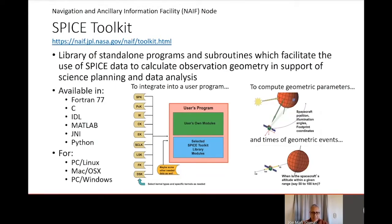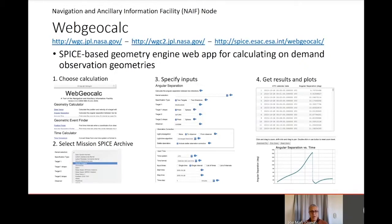The SPICE toolkit is a library of standalone programs and subroutines that users can use in their own programs to facilitate the use of SPICE data to calculate observation geometry in support of science planning and data analysis. The toolkit is available in a large number of languages for both PC and Mac platforms, and it is available from the PDS NAIF node. WebGeoCalc is a SPICE-based geometry engine app that can be used to calculate on-demand observation geometries without coding. It operates using user-selected SPICE data from the NAIF server, produces numeric results, and may optionally produce plots as well.